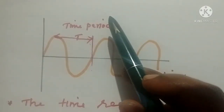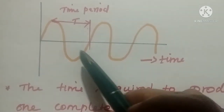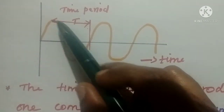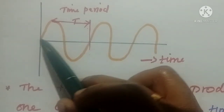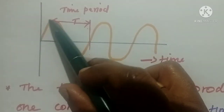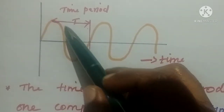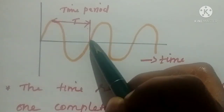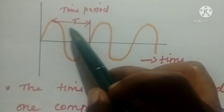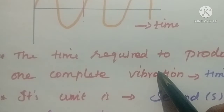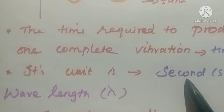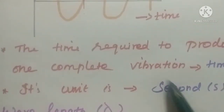The next characteristic is time period. Time period means the time required to produce one complete vibration. From one point to completion of one full vibration — how much time is taken — that is the time period. Time required to produce one complete vibration is called time period. The unit of time period is second.